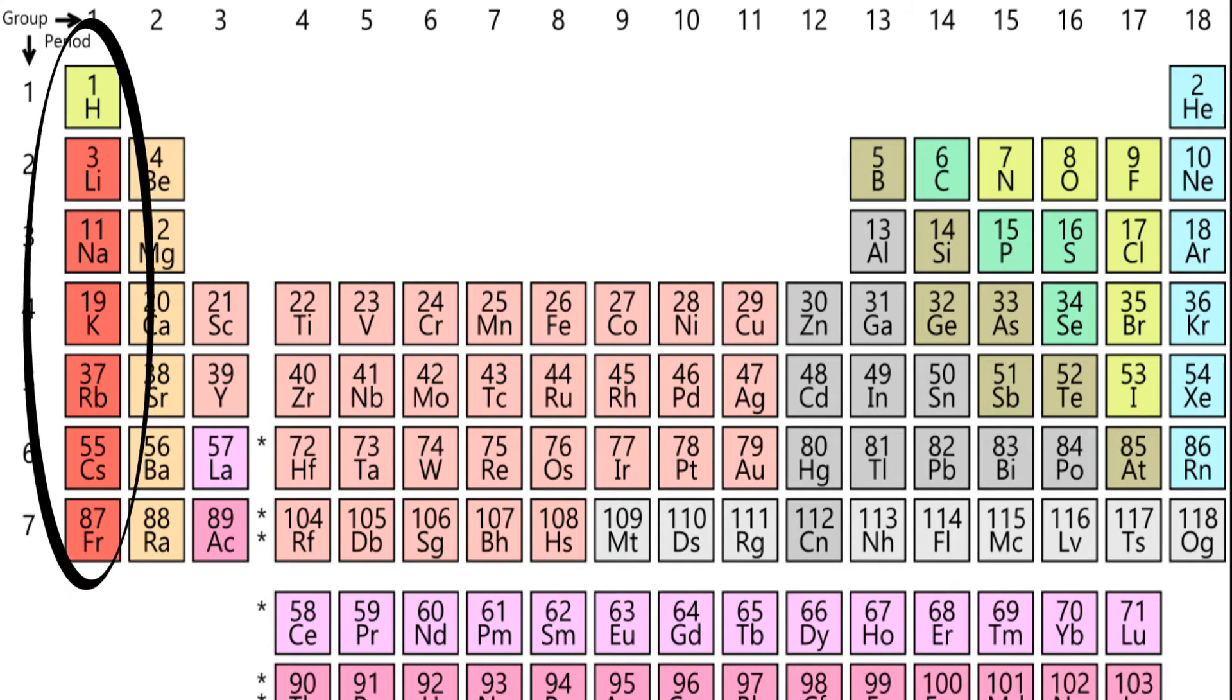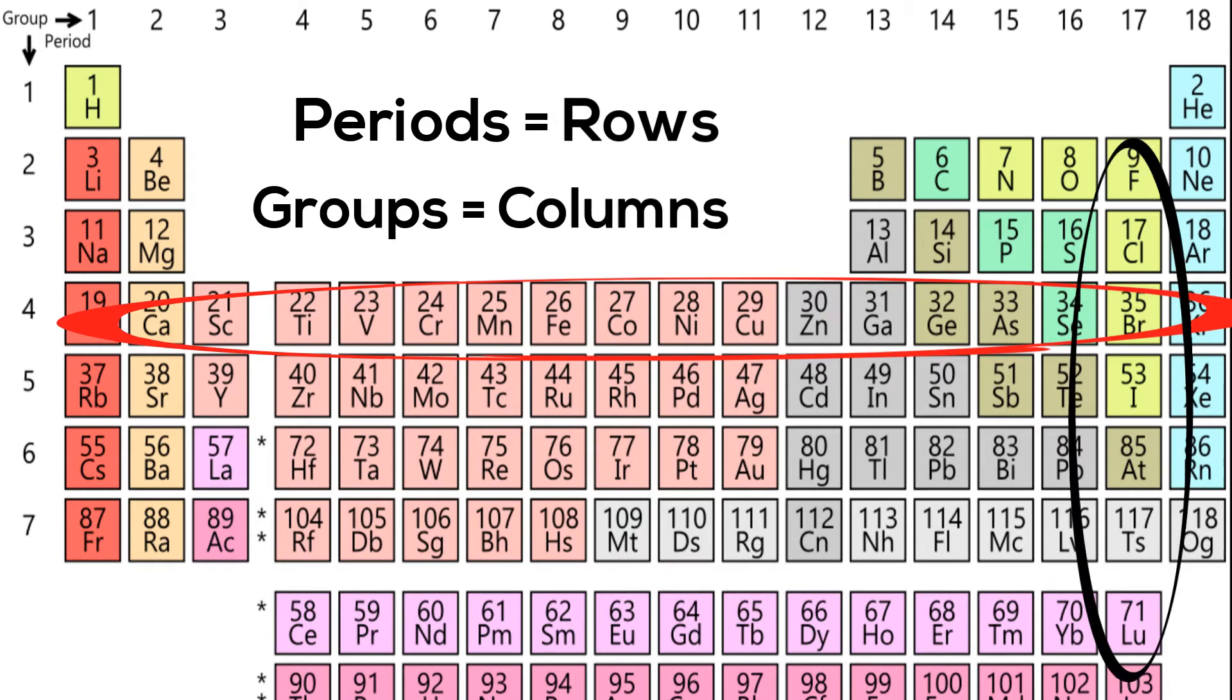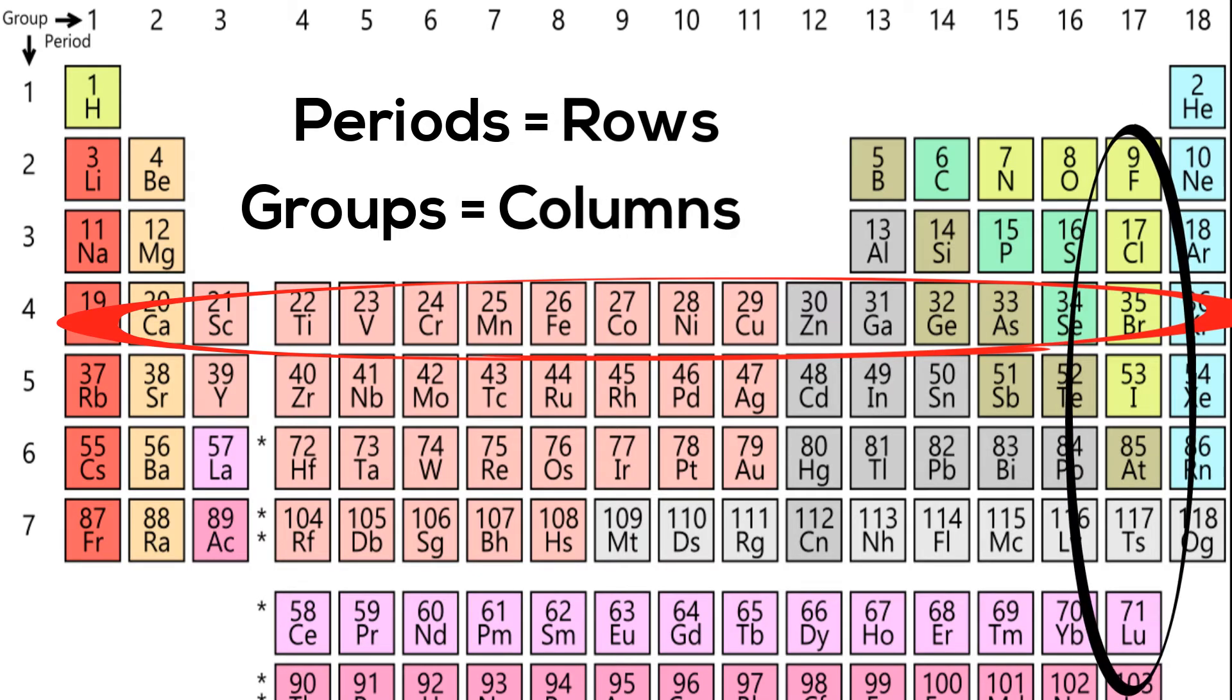If you take a look at the periodic table, you will notice seven horizontal rows. These horizontal rows are called periods. Table rows are commonly called periods and columns are called groups. There are seven periods.